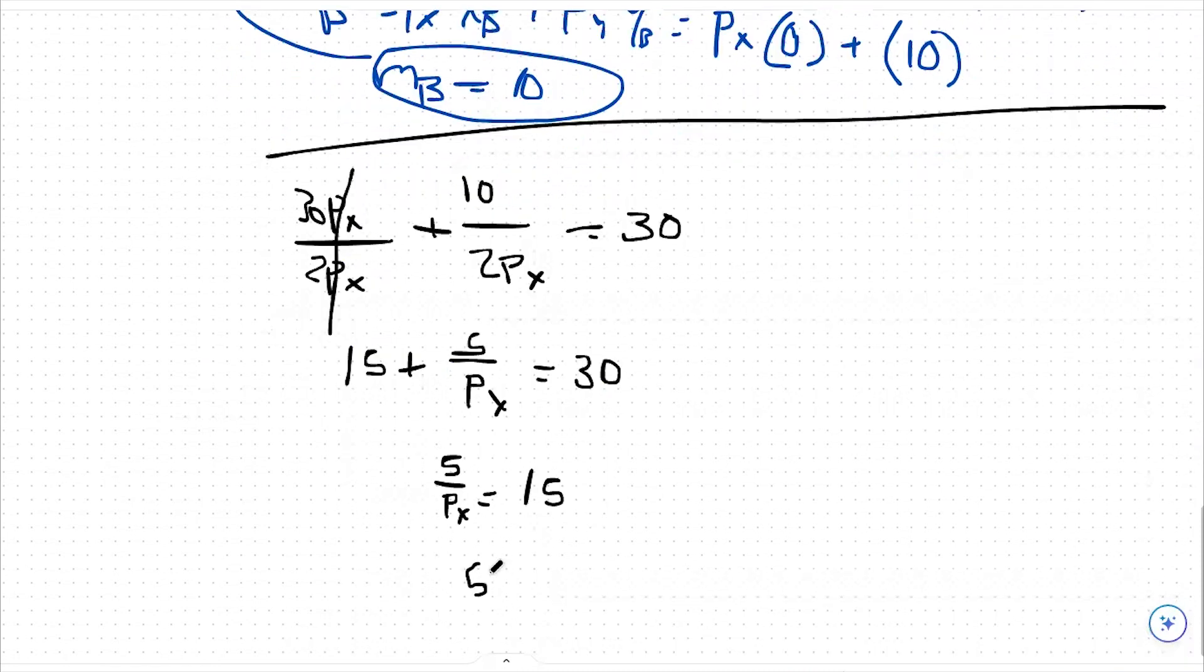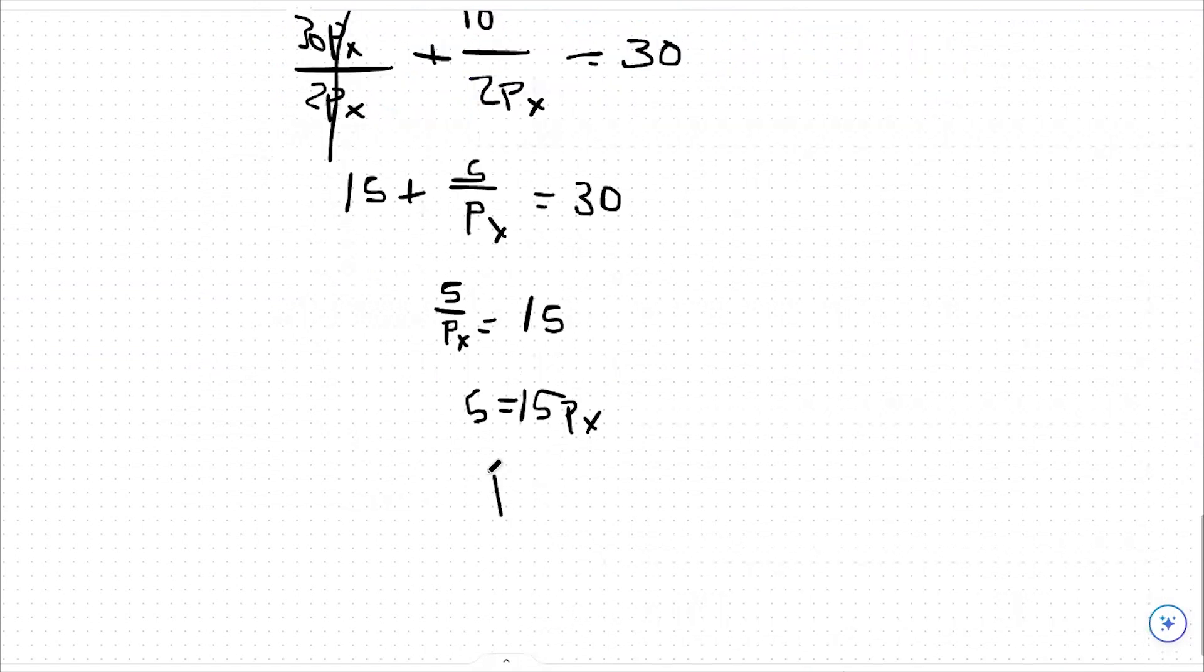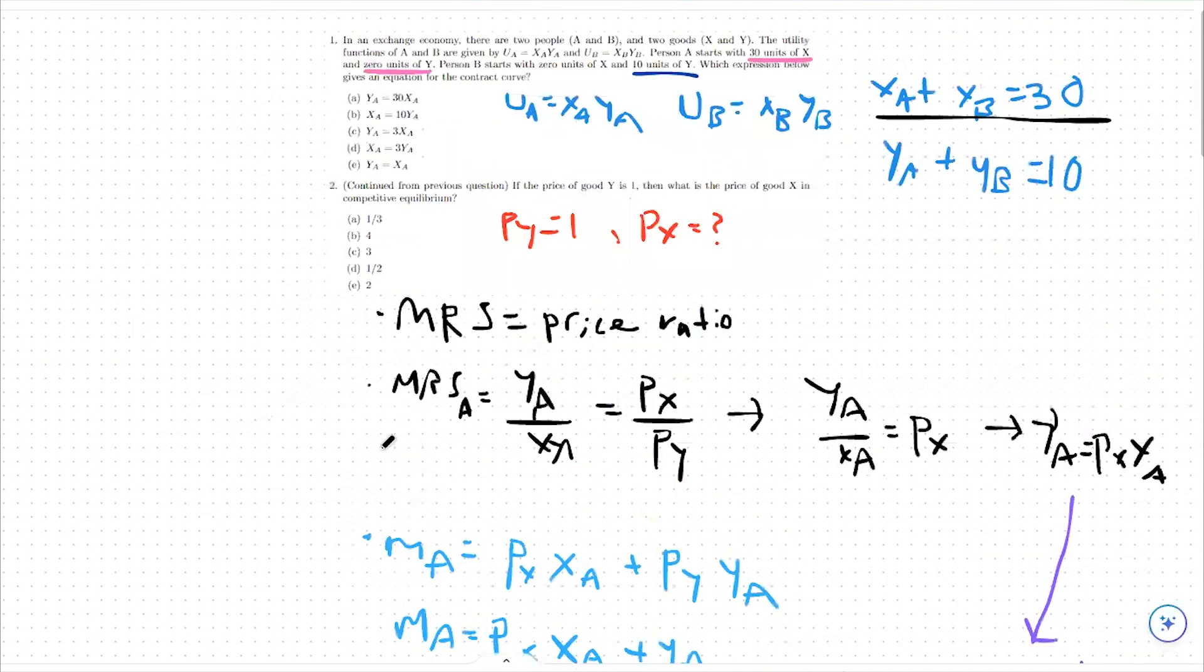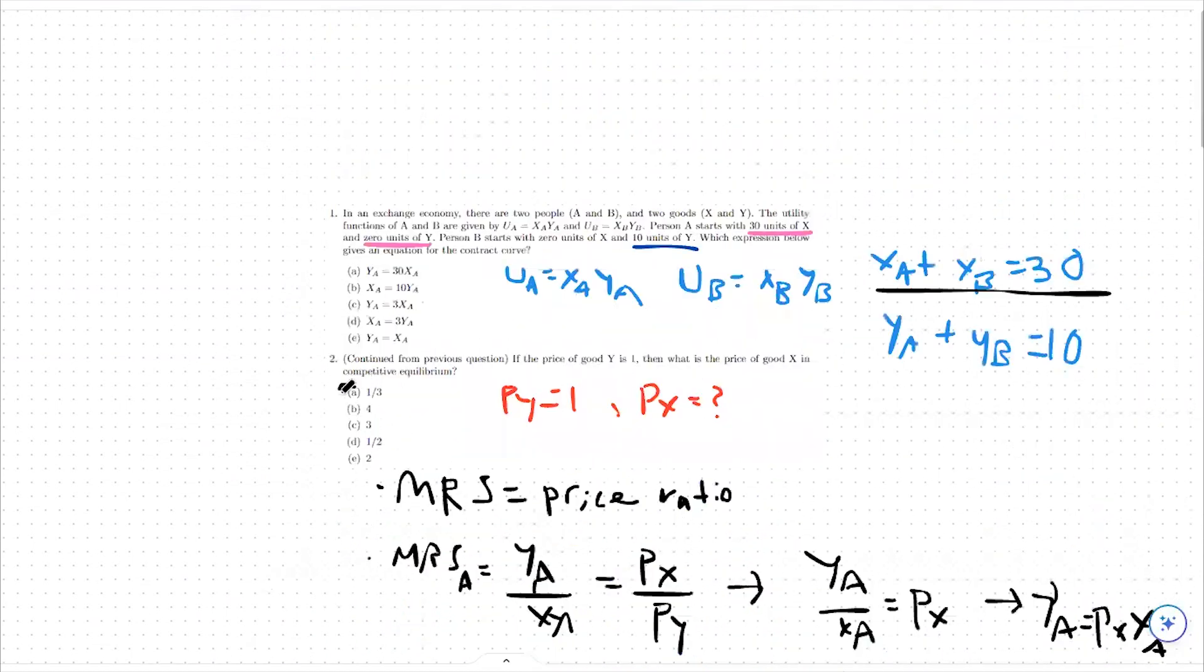So 5 equals 15 px. Or px is equal to one third. So the price that I sell unit x at is one third of a dollar or option A.